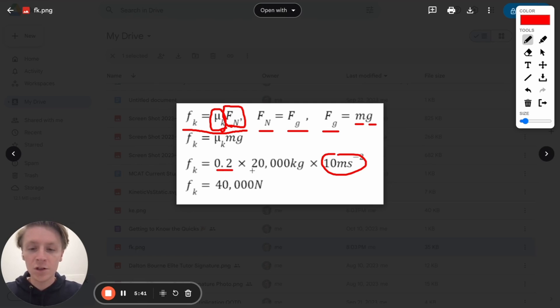So we plug those values in, the coefficient, the mass of the train, and g here, because we're just plugging in mg for normal force. We crunch those numbers and we find out that the frictional force is about 40,000 newtons. Remember that with MCAT math, you absolutely can and should round. It'll make your life easier.